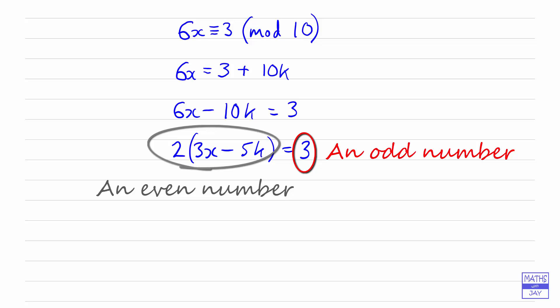In fact, it's because 6 and 10 have a common factor and 3 is not divisible by that common factor. So because 6 and 10 are even numbers and 3 isn't, this linear congruence has no solutions.